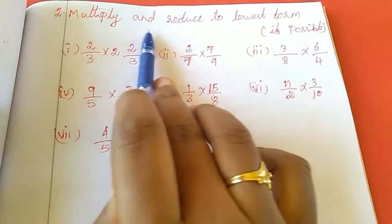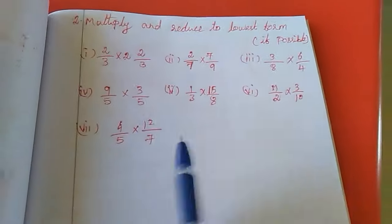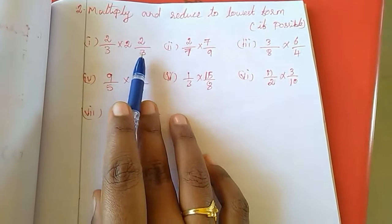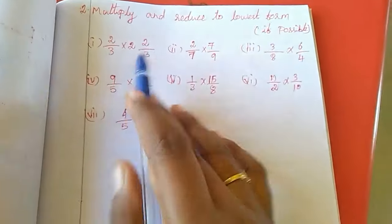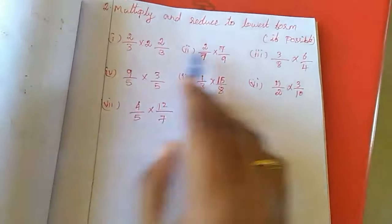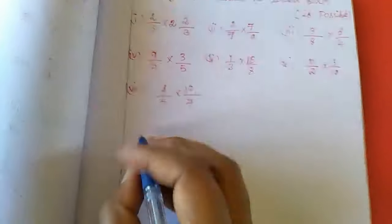Second sum is multiply and reduce to lowest form if possible. You have to multiply the two fractions and if it is possible, you can change as a lowest fraction. In this also, first and last I am going to do, balance 1, 2, 3, 4, 5 sums is homework for you.